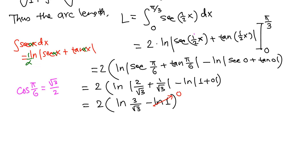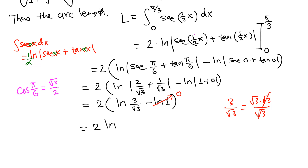Everything is positive so we don't need absolute value. Combining the fractions: 2/√3 + 1/√3 = 3/√3. Note that 3/√3 simplifies: since 3 = √3 · √3, we get 3/√3 = √3. So the answer so far is 2·ln(√3).